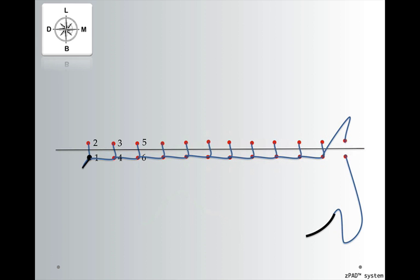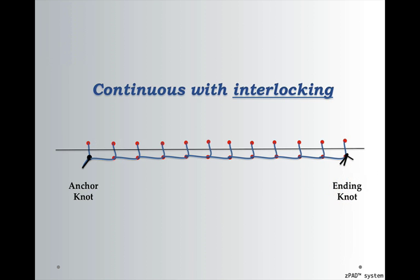And when you get to the end of the flap on the mesial aspect, again, you leave a loop. This time you will not pass the needle through it, but you'll tie the knot. You look at the loop, you'll consider the loop as the short end, and you'll tie the knot. And this is how you create a continuous suture with interlockings, with some safeties, with our anchoring suture and our ending knot. Continuous suture with interlocking.